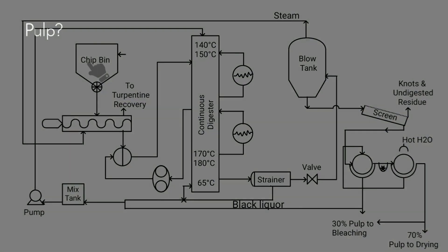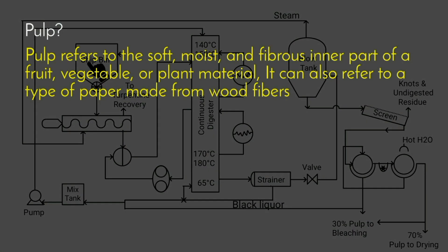First of all, we will know what is pulp. Pulp refers to the soft, moist, and fibrous inner part of a fruit, vegetable, or plant material. It can also refer to a type of paper made from wood fibers.